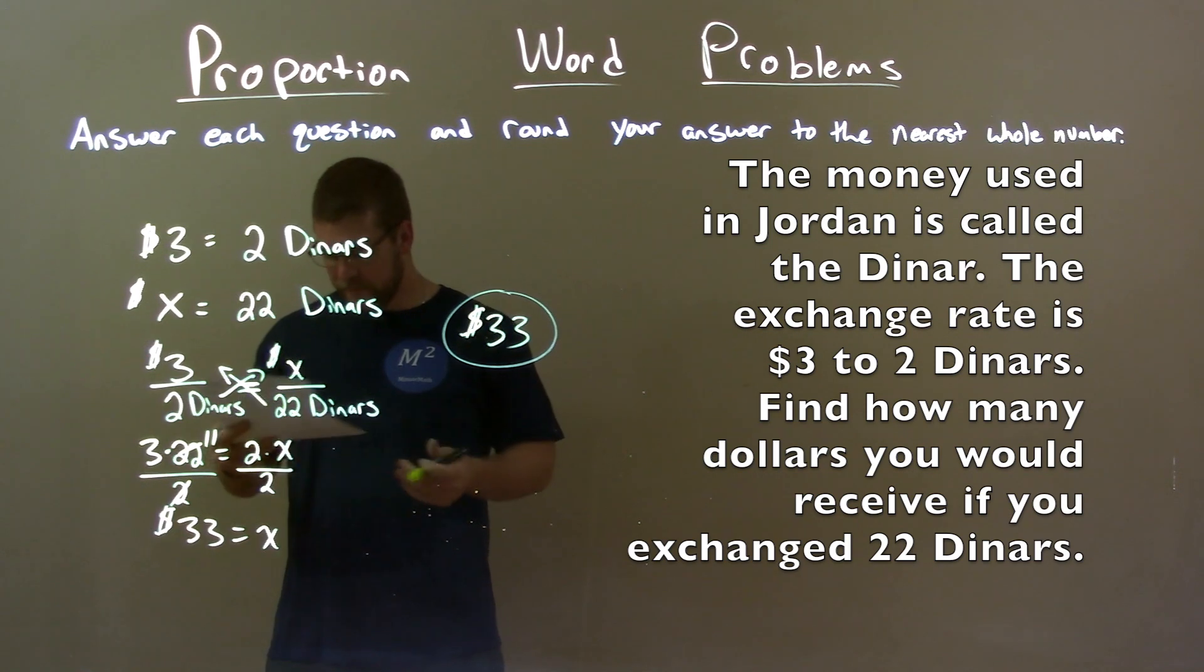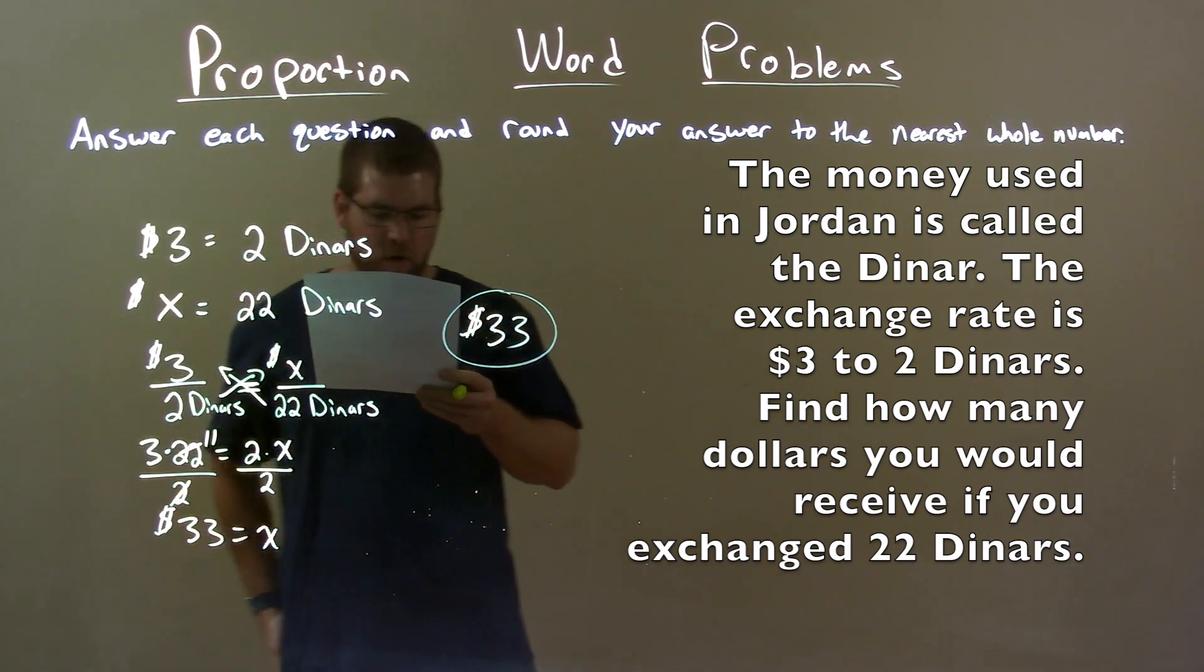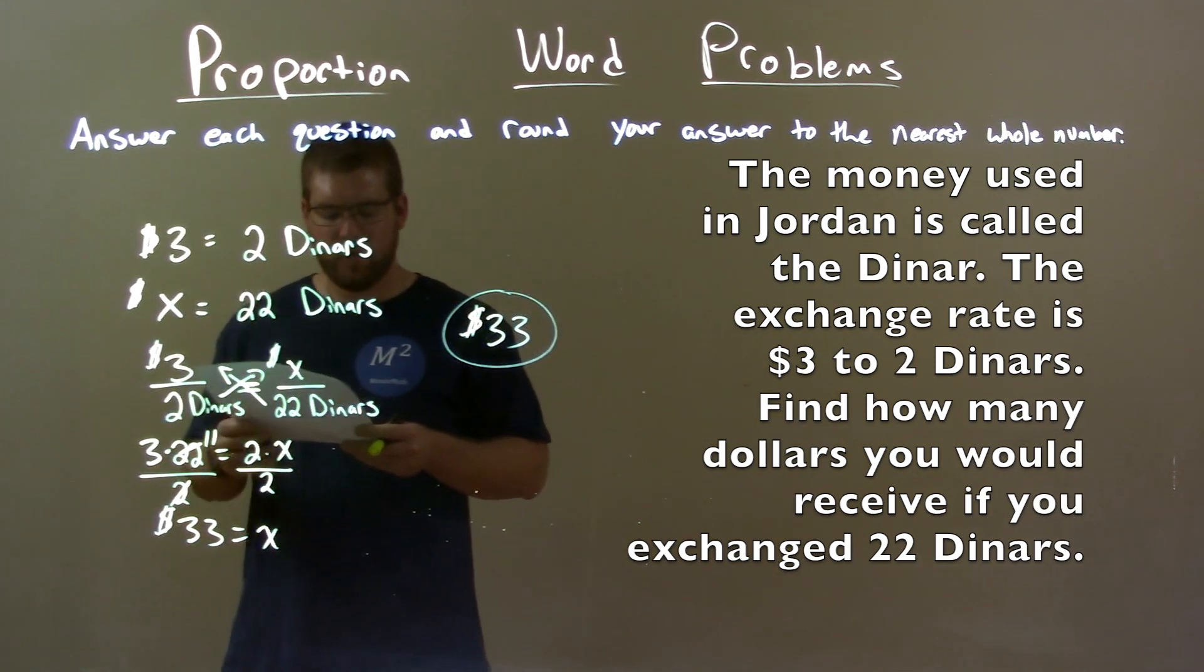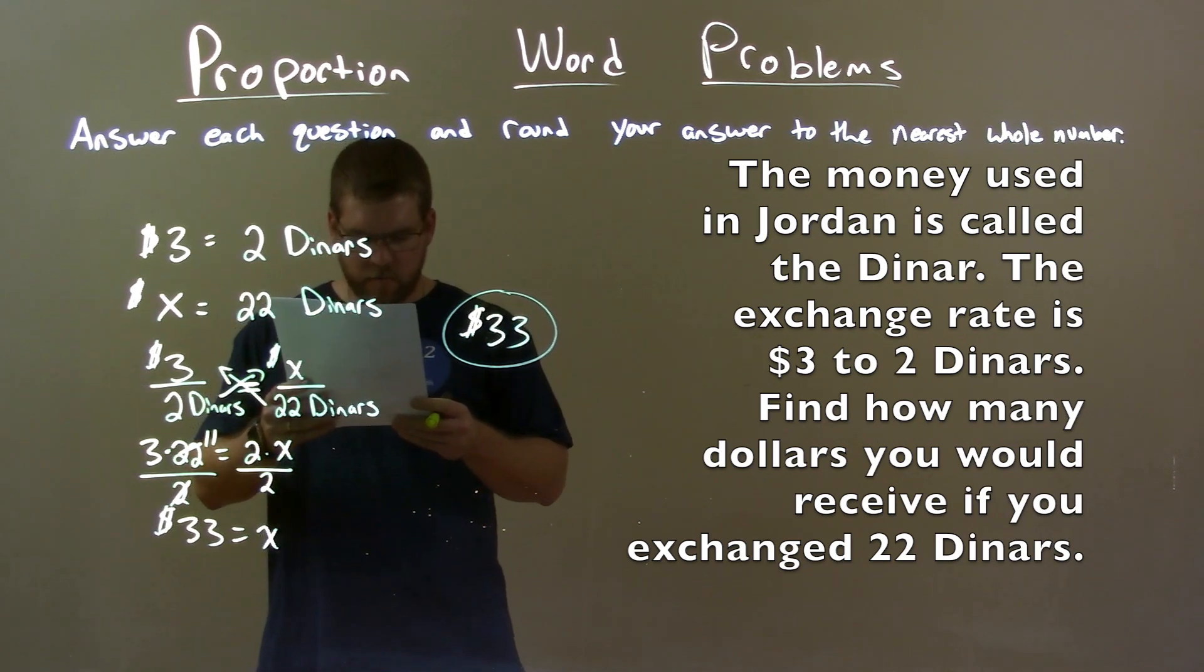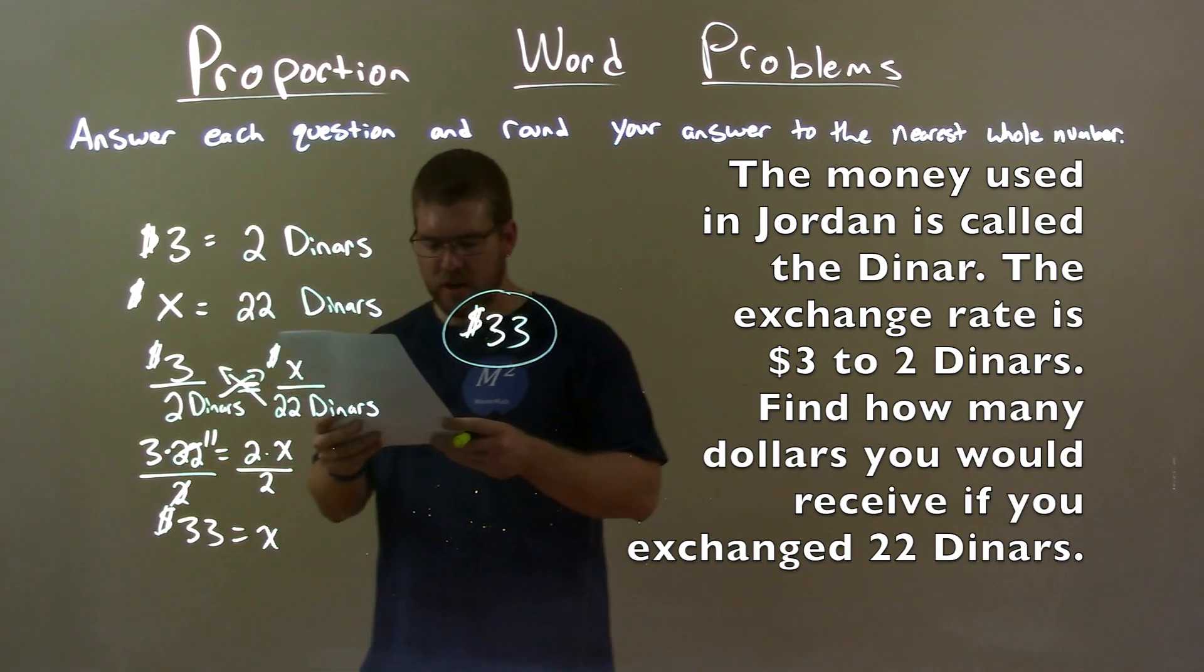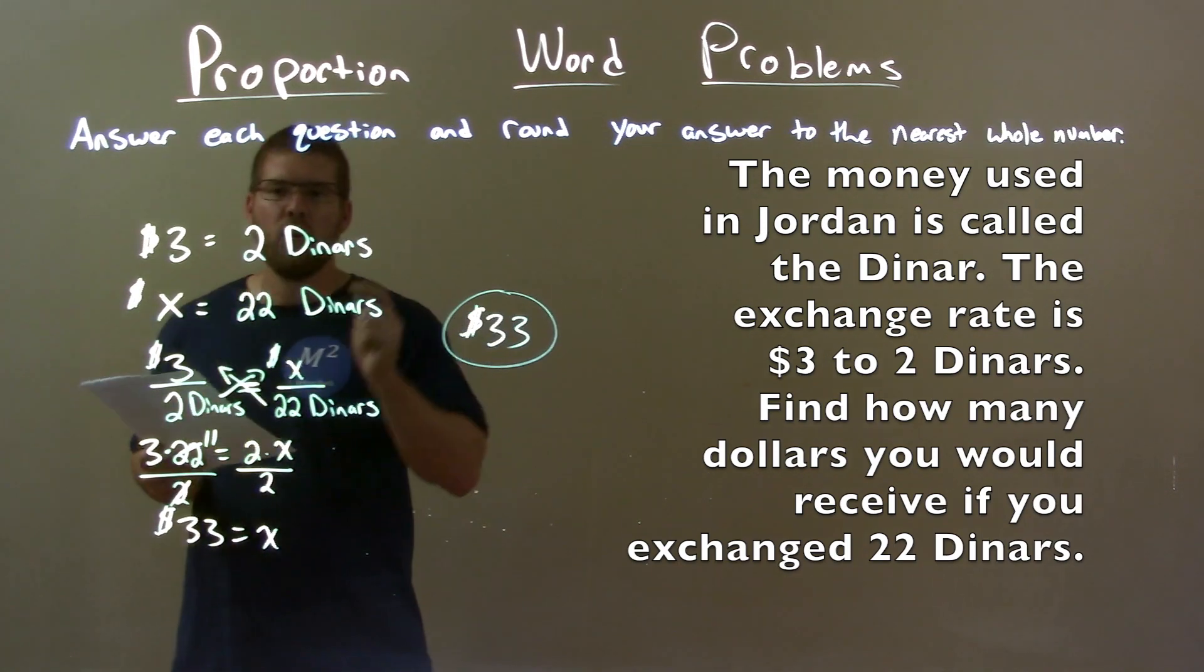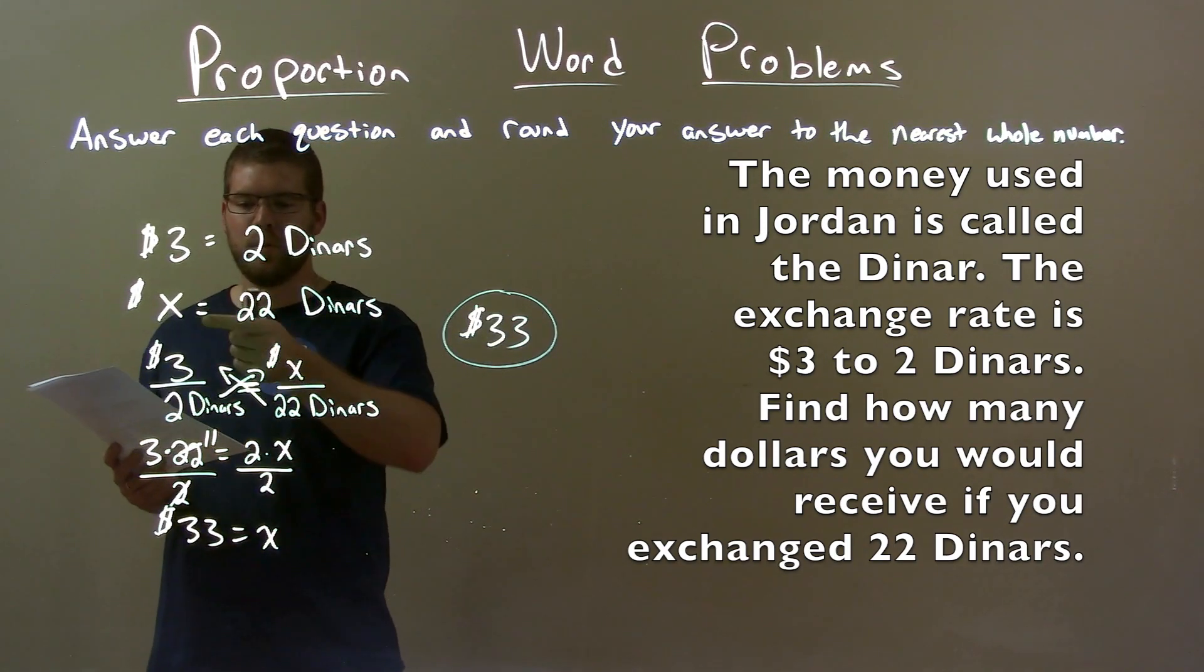So quick recap. The money used in Jordan is called the dinar. The exchange rate is 3 dollars to 2 dinars. Find how many dollars you would receive if you exchanged 22 dinars. Well we set up a proportion here of 3 to 2.